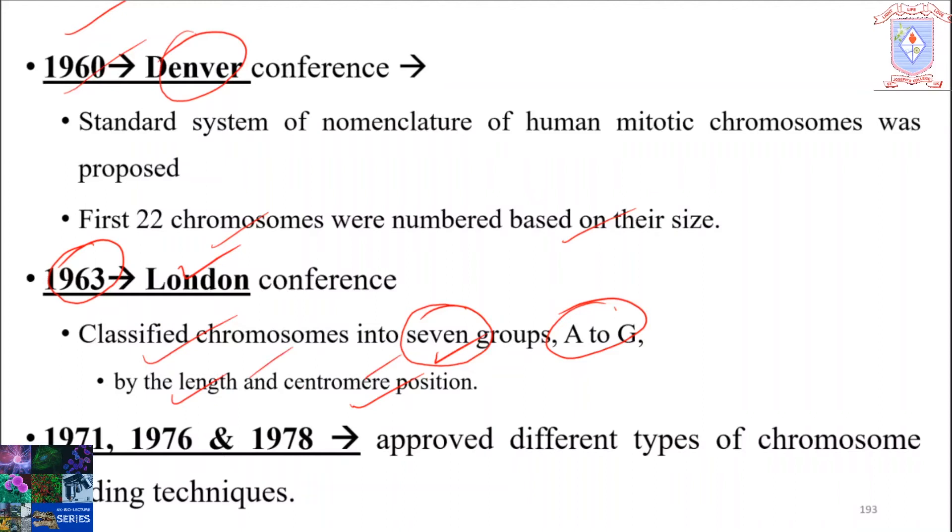Then in the ISCN conferences in 1971, 1976, and 1978, they approved different types of chromosomal banding techniques.